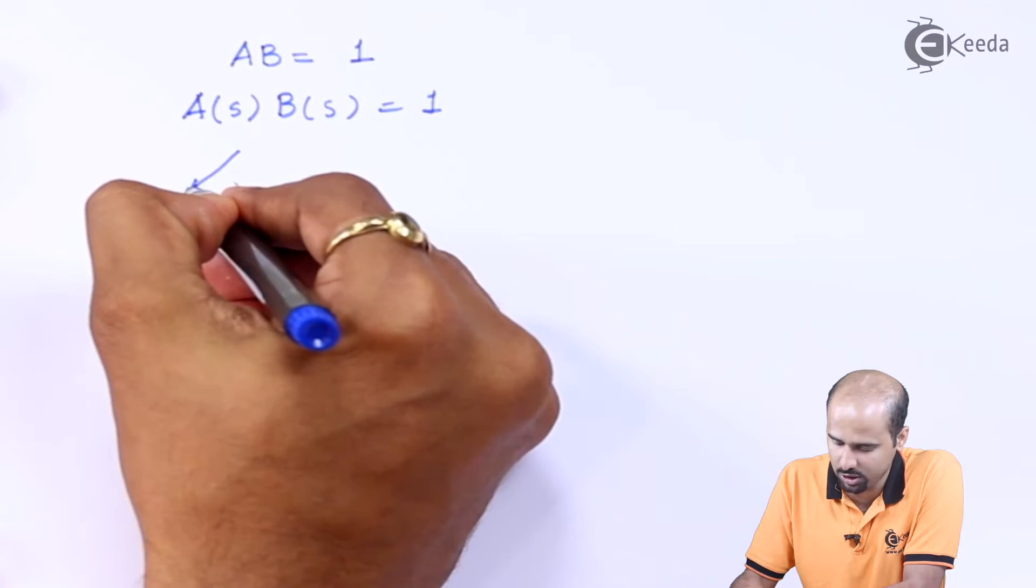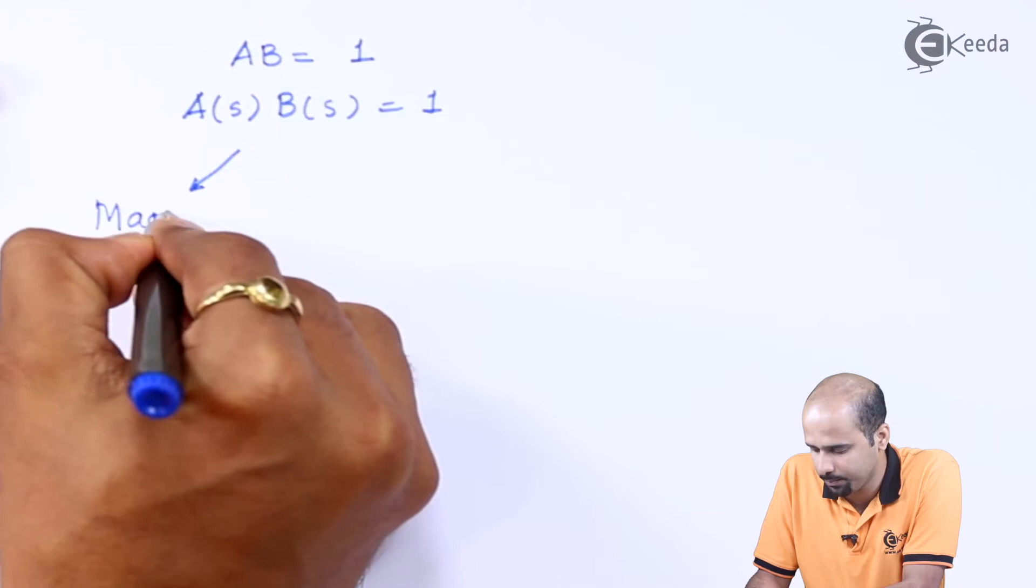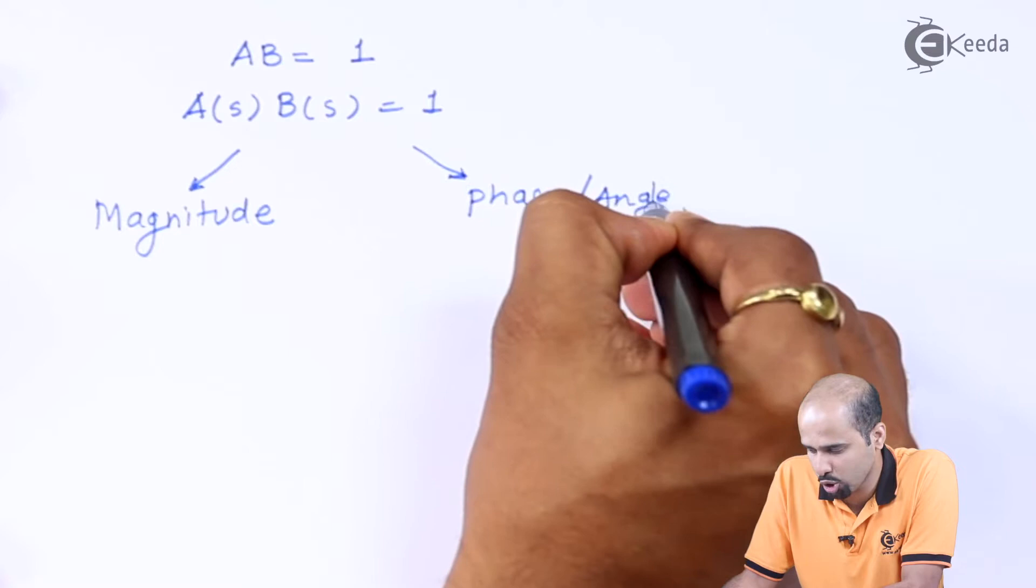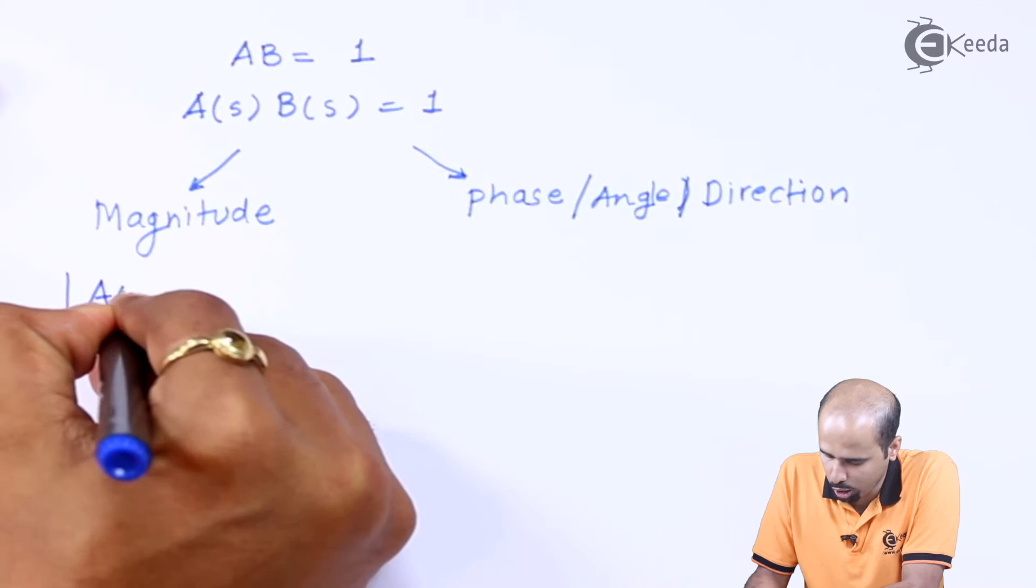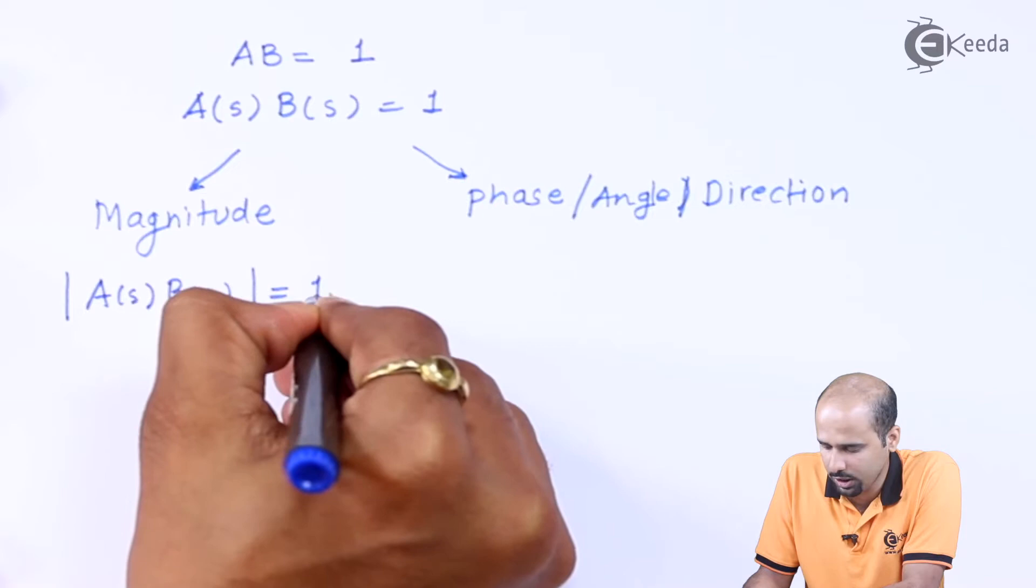So I can say that this is with A(s) and B(s) is equal to 1. Whenever frequency comes into picture, we will say that this particular product is divided into two parts, one is called as magnitude part and one is called as phase part or this is also called as angle part, also called as direction part. So magnitude, as far as magnitude is considered, we just have to take the mod of A(s) and B(s) and that should be equal to the right hand side that is 1.